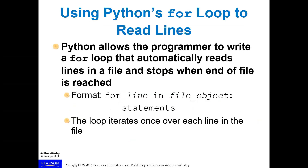Python allows the programmer to write a for loop that automatically reads lines in a file and stops when end of file is reached. The format is: for line in file object. Usually this file object is some type of a list, and to get that list we'll use a function like file.readlines, which gives us the list we can iterate through. The loop iterates once over each line in the file.